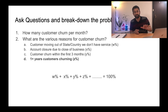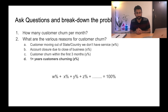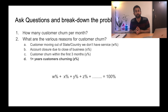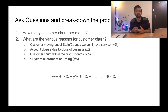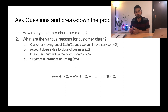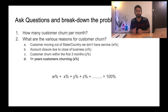The second option is account closure due to business closure — customers who close their utility account because they are closing their business. Again, this is a segment which cannot be solved because they are closing down their business and all related services will be closed along with it. So from the remaining 90 customers, we remove these as well — let's say five customers fall into this category — leaving us with 85 customers.